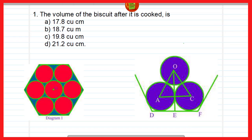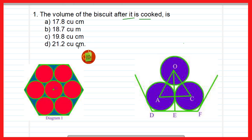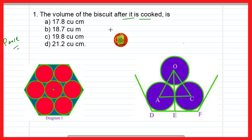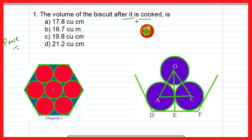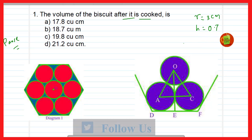The first question: what is the volume of the biscuit after it is cooked? Options are 17.8, 18.7, 19.8, or 21.2 cubic centimeters. Pause the video, try it yourself, solve it, and then check whether your answer is correct. It is given that after cooking, the radius of the biscuit is 3 centimeters and the height is 0.7 centimeters.